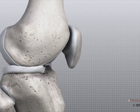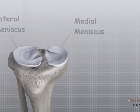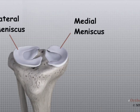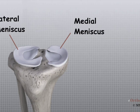Two special types of ligaments called menisci sit between the femur and the tibia. These structures are sometimes referred to as the cartilages of the knee, but the menisci differ from the articular cartilage that covers the surface of the joint. The two menisci of the knee are important for two reasons: one, they work like a gasket to spread the force from the weight of the body over a larger area, and two, they help the ligaments with stability of the knee.